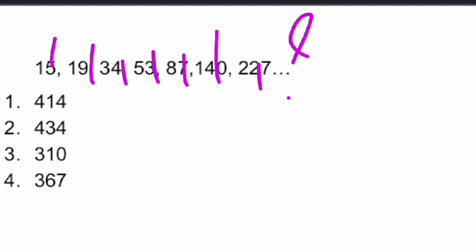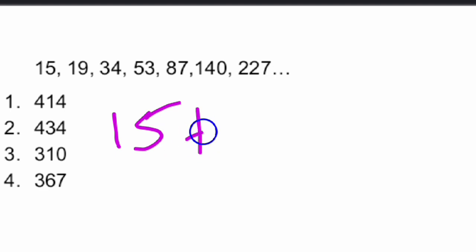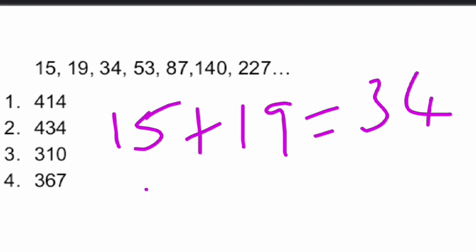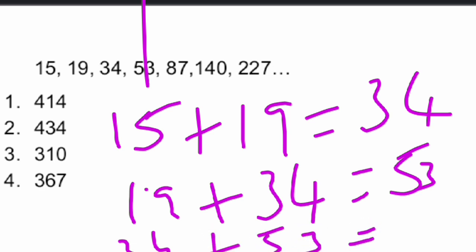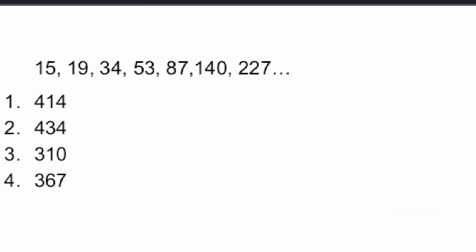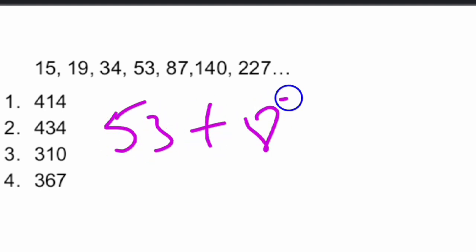Looking at the pattern: 15 + 19 = 34. Then the second number plus third number: 19 + 34 = 53. So the third number plus fourth number equals the fifth number. Following this Fibonacci-like pattern: each number is the sum of the two preceding numbers. Fourth number plus fifth number will give the sixth number.